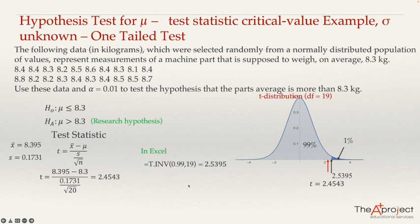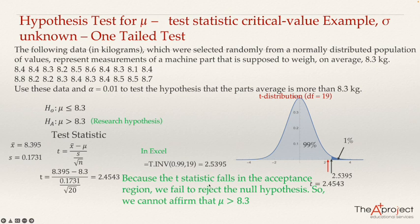So as a conclusion, because the t-test statistic falls in the acceptance region, we fail to reject the null hypothesis. So we cannot affirm that mu is more than 8.3. The things that the researcher was believing cannot be accepted, at least with 1% level of significance. So with that, I finish the explanation of this one-tail test. I hope you find it useful. Thank you.